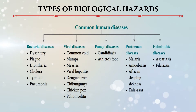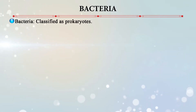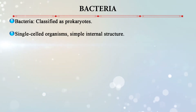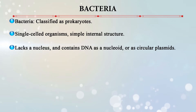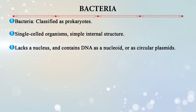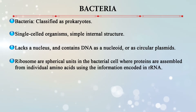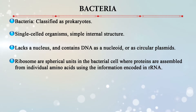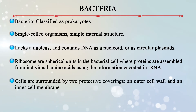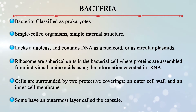Coming to bacteria — they are classified under prokaryotes. They are single-celled organisms with a simple internal structure. They lack a nucleus, contain DNA as a nucleoid and also as circular plasmids. They have ribosomes, which are spherical units where proteins are assembled from individual amino acids using information encoded in ribosomal RNA. The cells are surrounded by two protective coatings: an outer cell wall and an inner cell membrane. Some also have an outermost layer known as the capsule.